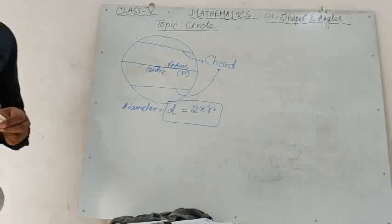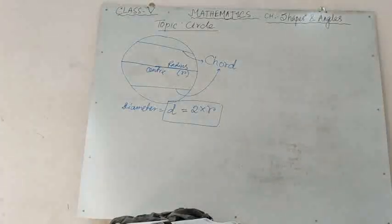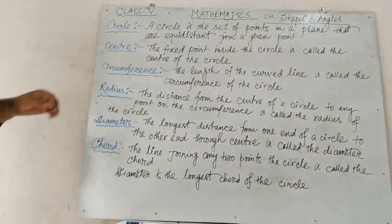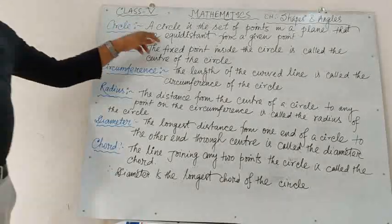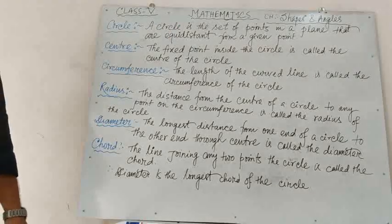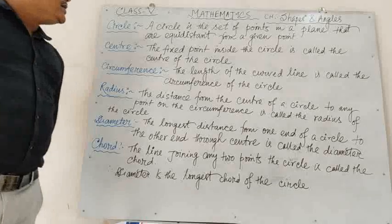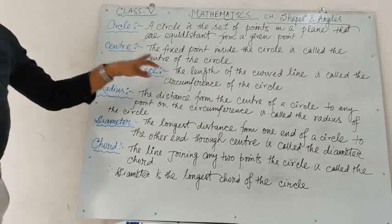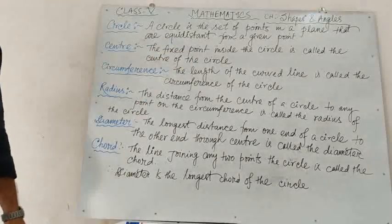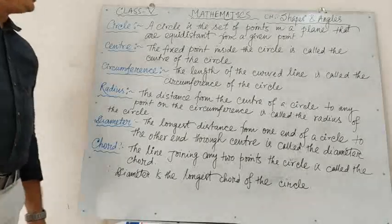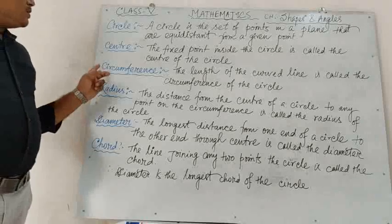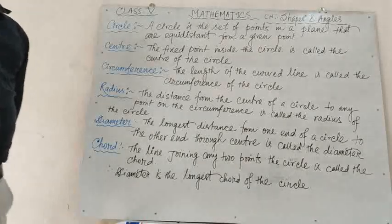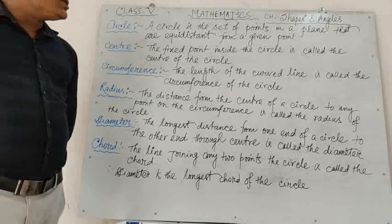Now we have to write some definitions. First, circle: a circle is the set of points in a plane that are equidistant from a given point. Center: the fixed point inside the circle is called the center of the circle. Circumference: the length of the curved line is called the circumference of the circle.